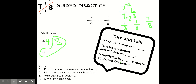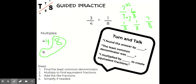I would say: I found the answer by listing out the multiples of four and eight and finding the least common denominator. The least common denominator was eight. And I multiplied by two to create equivalent fractions — or more specifically, I multiplied four times two to create an equivalent fraction.